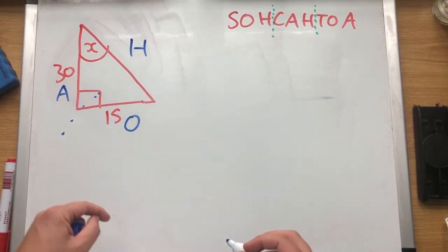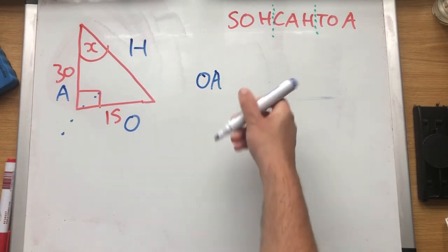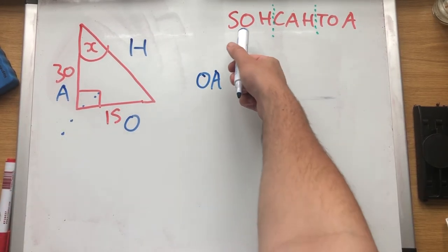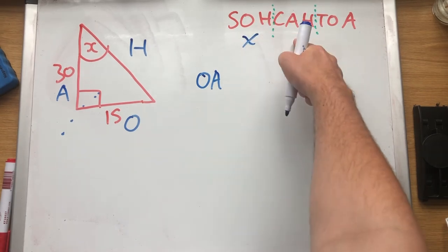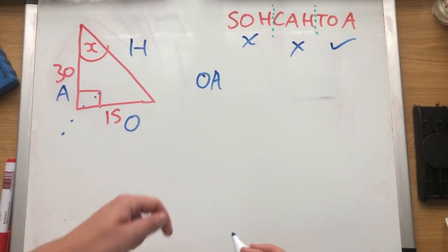We're now looking, what does our question involve? It involves O, because that's 15, and A because that's 30. It involves O and A. Which one's opposite and adjacent? Well, that one involves hypotenuse. It's not that one. That one's A and H. It's not that one. That one's O and A. It's that one.